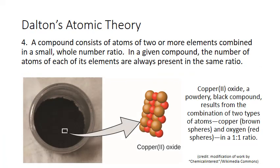The fourth postulate of Dalton's theory is that a compound consists of atoms of two or more elements combined in a small whole number ratio. In a given compound, the number of atoms of each of its elements are always present in the same ratio. So consider the compound copper oxide.